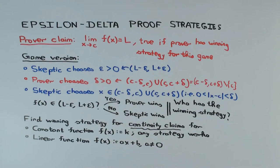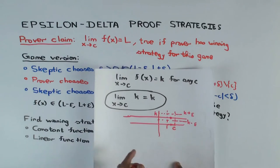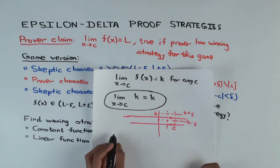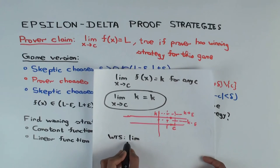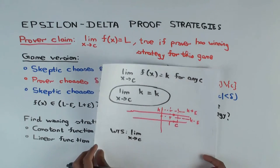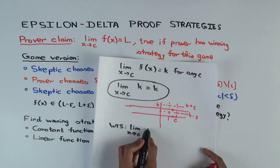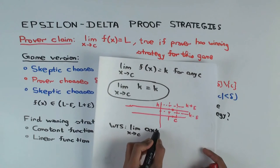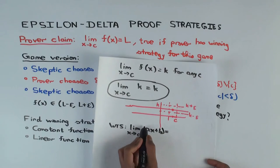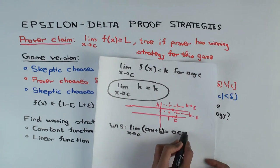Let's now proceed to the linear case. What should the strategy of the prover be? In the linear case, what are we trying to show? We're trying to show that the limit as x approaches c of f(x), where f(x) is ax plus b, equals ac plus b. That's what we want to show.